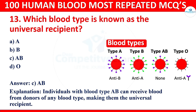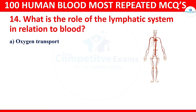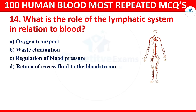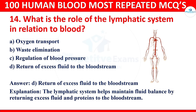Question 14: What is the role of the lymphatic system in relation to blood? Options: oxygen transport, waste elimination, regulation of blood pressure, or return of excess fluid to the bloodstream. The correct answer is return of excess fluid to the bloodstream. The lymphatic system helps to maintain fluid balance by returning excess fluid and proteins to the bloodstream.